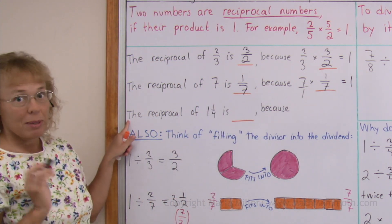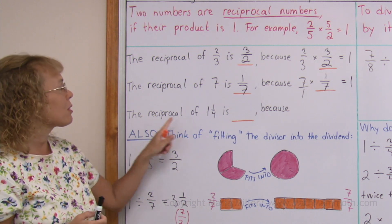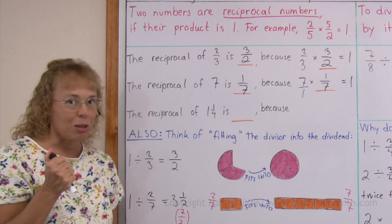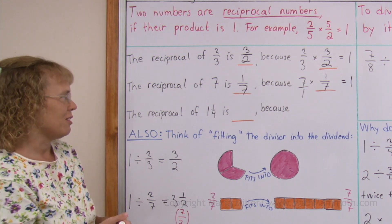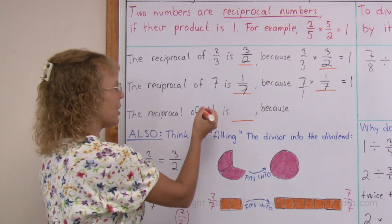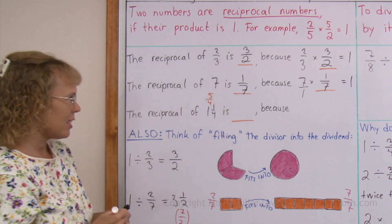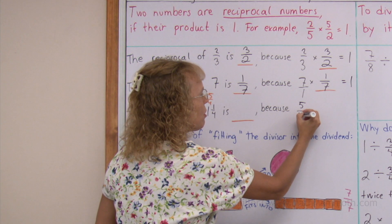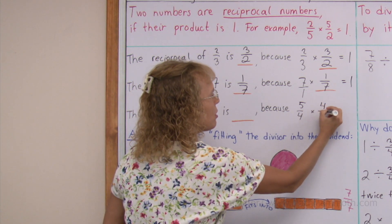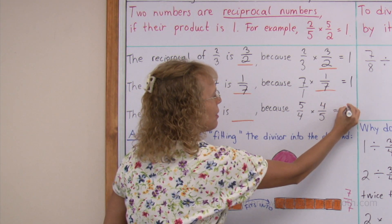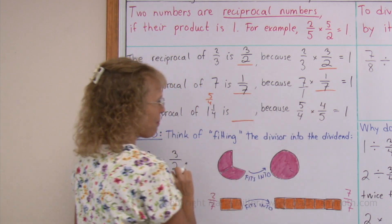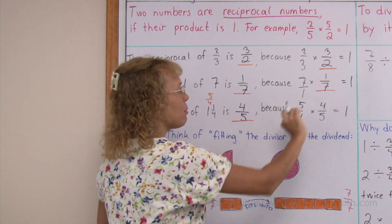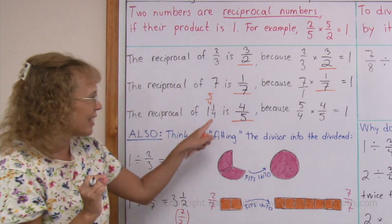How about a mixed number? The reciprocal of 1 and 1 fourth. It helps if you first write this mixed number as a fraction — it is 5 fourths. And then 5 fourths times 4 fifths would equal 1, because you get 20 divided by 20. So we get 4 fifths. Again, flipping it works, but you have to first write it as a fraction.